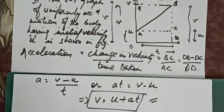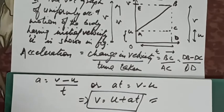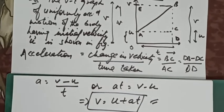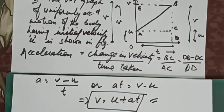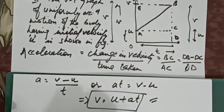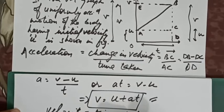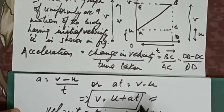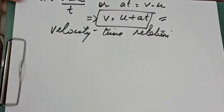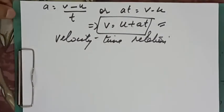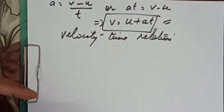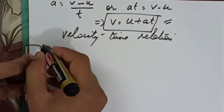This is the required first equation of motion, and this equation is also known as the velocity-time relation. So this is all about the first equation derivation.